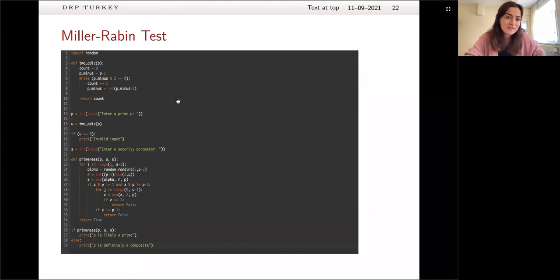So, we have written this Miller-Rabin algorithm, and we defined a two-adic function, because in the previous slide, P tilde must be equal to two to the U times R. And U was the two-adic evaluation of P tilde, and we just referred to that U here. And so, this is our function, we have defined some function as primeness. You are just entering your candidate P, you are entering the U, which is the power of two in the algorithm, and you are entering your security parameter. And as an output, you see here, it just gives us if it's a likely prime or if it's definitely a composite.